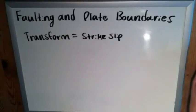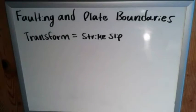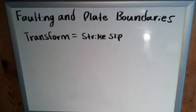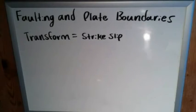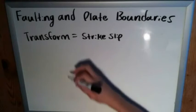Convergent and divergent boundaries are a bit different because each of them has vertical motion involved. So they're either going to be normal or reverse — you could say they're dip-slip — but if you want to be more exact, you have to look at it this way.